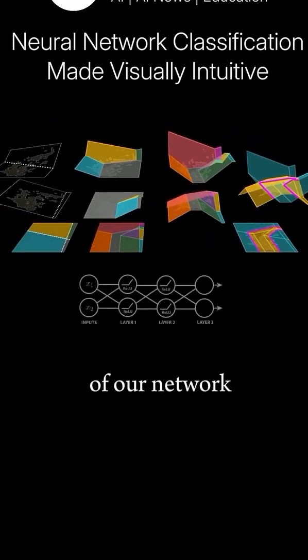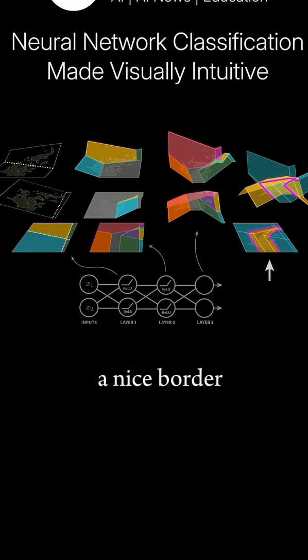So the first layer of our network creates these two folds and four separate regions on our map, which are then split by our second layer into these ten regions, which are used by our final layer to create these surfaces, which intersect in a nice border.